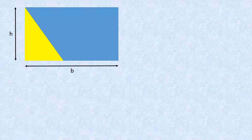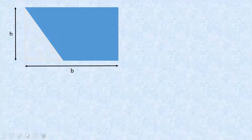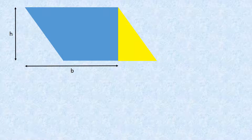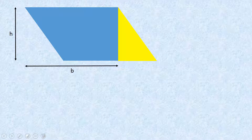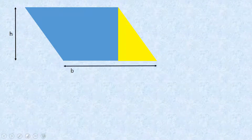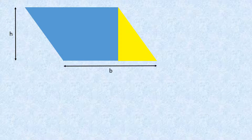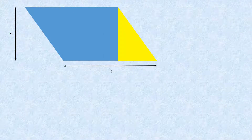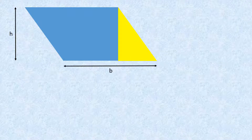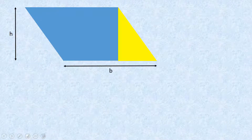If I was to just cut that triangle out of my rectangle and put it on the other side, that shape we've got is a parallelogram. We can see that length there which we've labelled B is still the same, and we haven't lost any area because all we've done is move that yellow triangle over from the left-hand side to the right-hand side. So the area is exactly the same.